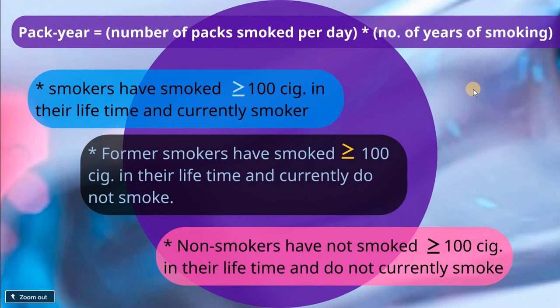One pack-year is a cumulative exposure that corresponds to smoking 20 cigarettes — one pack — per day for one year. For example, a smoker who has smoked 20 cigarettes per day for 15 years has 15 pack-years of smoking. This may be quite confusing except for professionals. We as periodontists know how to calculate this, and this is how we assess the current status of a smoker who is currently smoking.